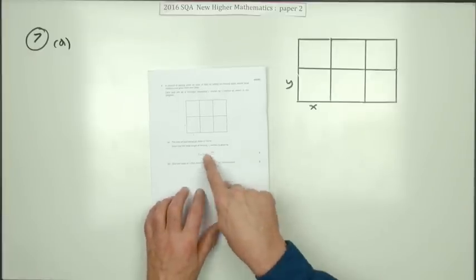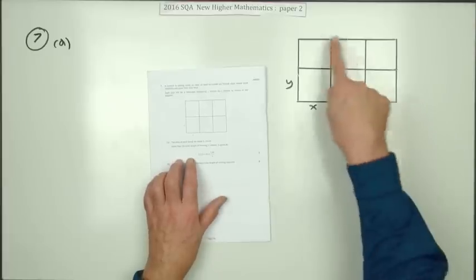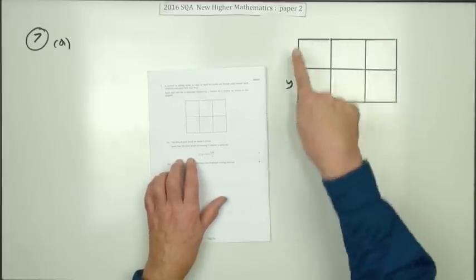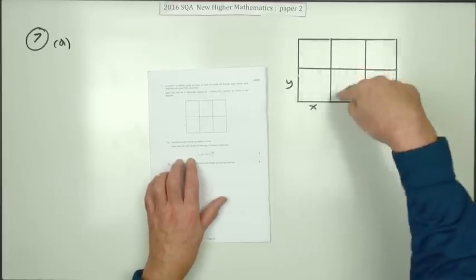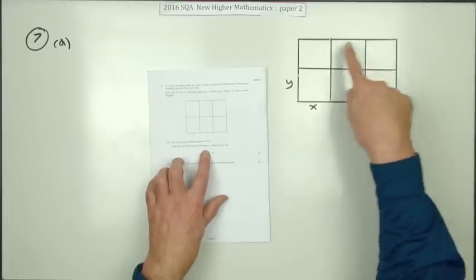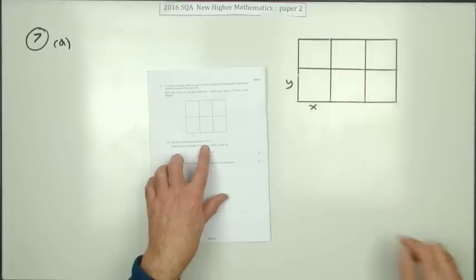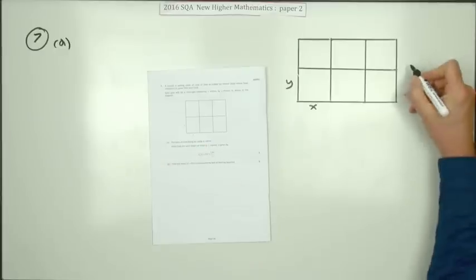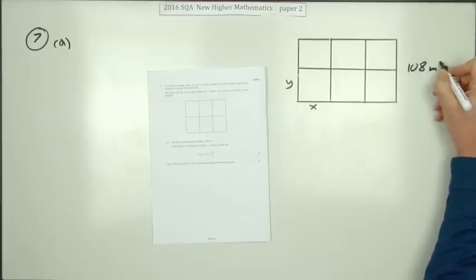So it's this first part here. What have we got? There's this plot of land that's divided into six equal parts with these fences, and it says the total area of this is a hundred and eight. Take a note of that, 108 square meters.